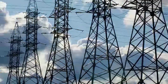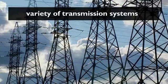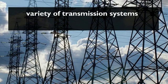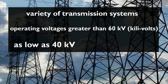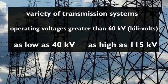Depending on the facility, a variety of transmission systems exist, and transmission generally refers to operating voltages greater than 60 kV kilovolts. There are some facilities and systems that classify transmissions as low as 40 kV and some as high as 115 kV.